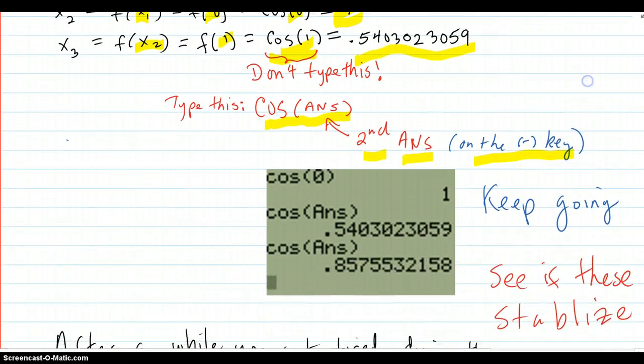You get this answer syntax from second ANS, and that's on the minus key. First you put in cosine of 0, that's 1. Then you go cosine of that answer, which is 1, and that gives you this number. You get cosine of the answer, cosine of that, and keep going like that.